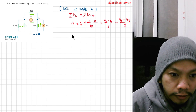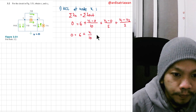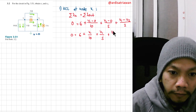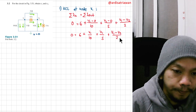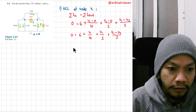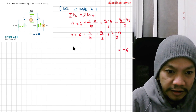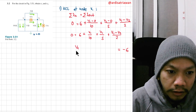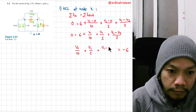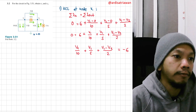Simplifying: 0 = 6 + V1/10 + V1/5 + (V1 minus V2)/2. Moving the 6 to the left-hand side gives: minus 6 = V1/10 + V1/5 + (V1 minus V2)/2. Now we can multiply both sides by 10 to get rid of all the denominators.